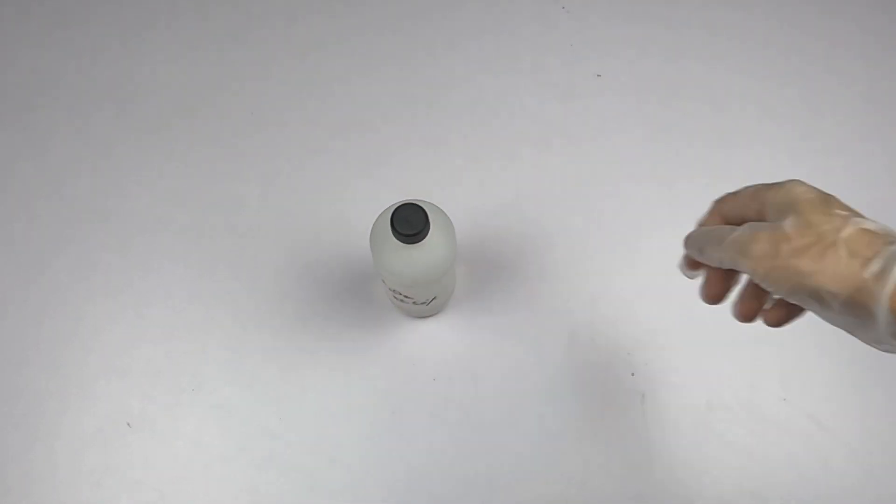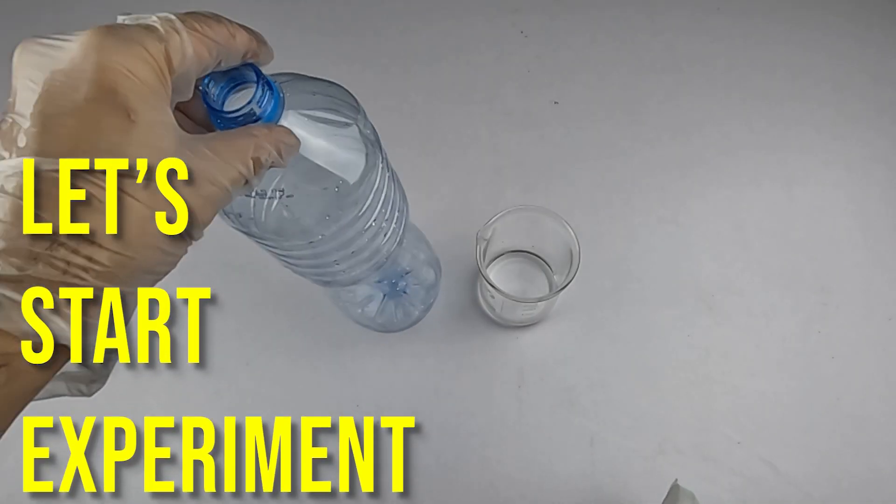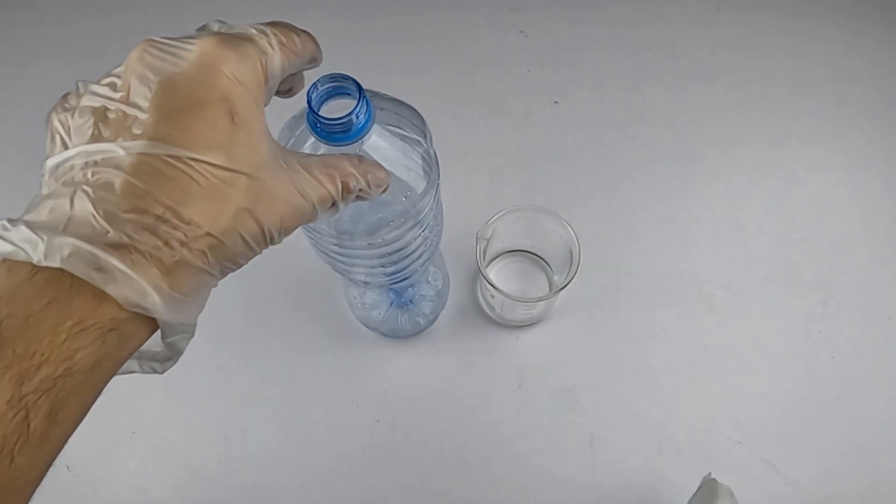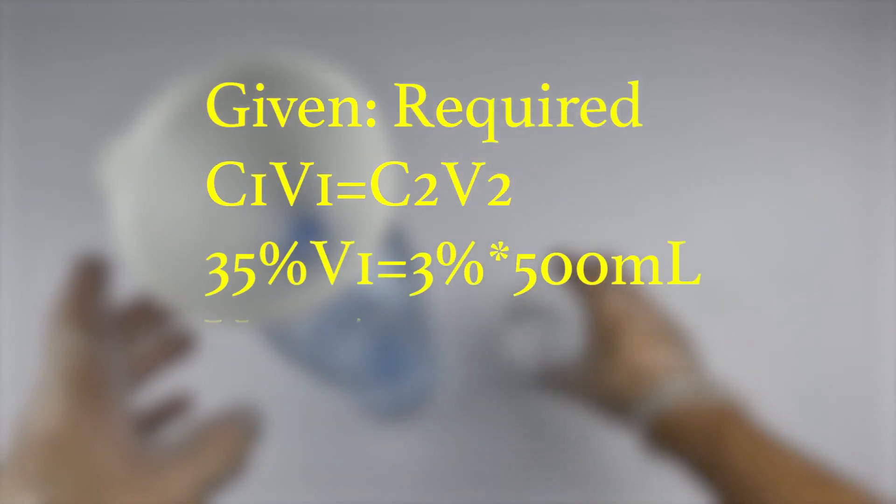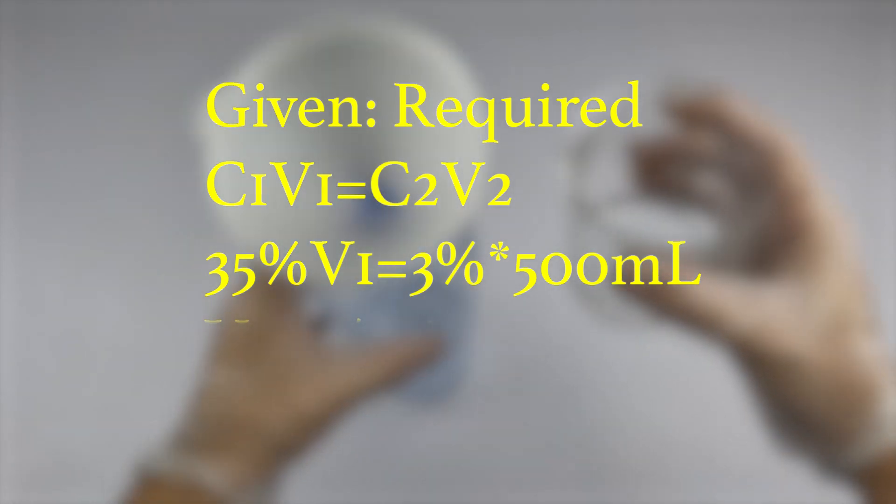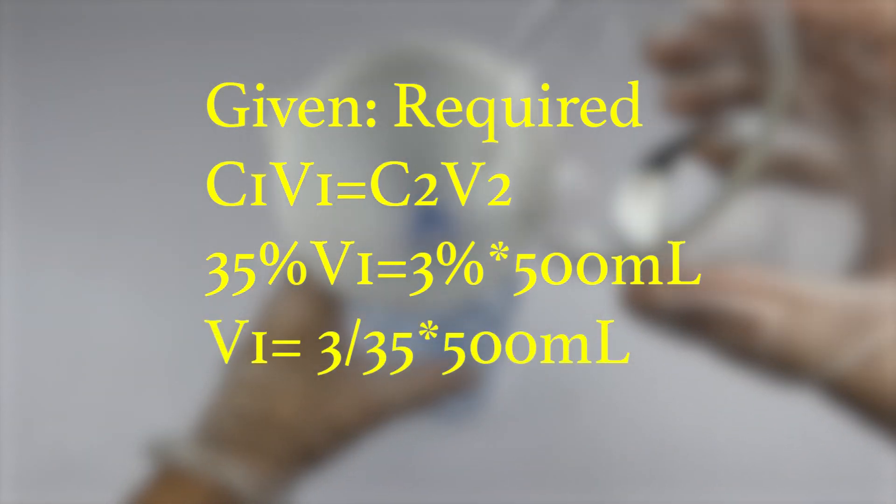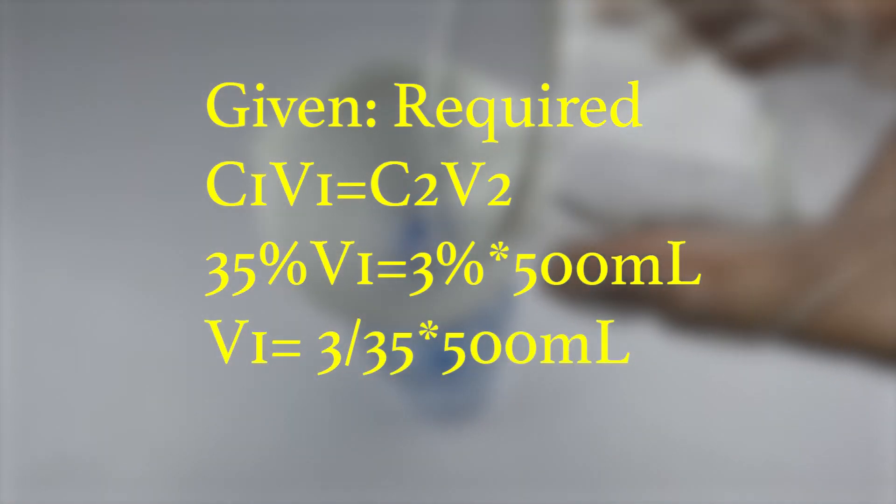Let's start the experiment. To dilute hydrogen peroxide, we use the dilution formula: C1V1 = C2V2. Therefore, 35 × V1 = 3% × 500ml. So V1 = 3/35 × 500ml = 42.85ml.